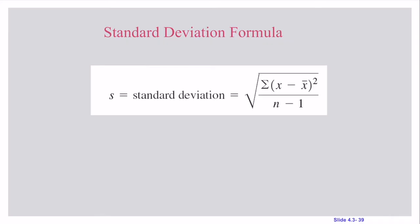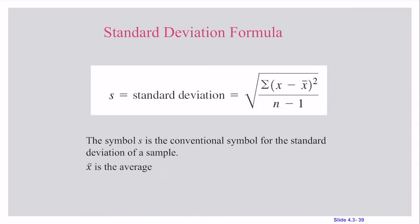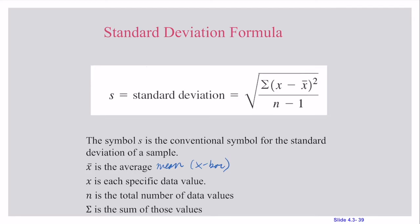So here's the formula for the standard deviation and let me break it down. s is our conventional symbol for standard deviation of a sample. Remember our sample is a subset of the population. x̄ is the average, also the mean. x is each specific data value, n is our total number of data values, and sigma (Σ), this Greek letter sigma, identifies the sum.